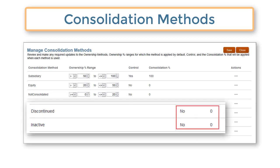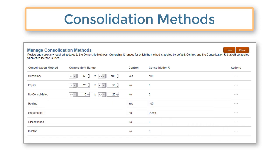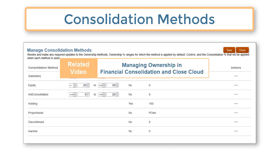The discontinued and inactive methods set control to no and consolidation percentage to zero. These methods are reserved for future releases. You can manually override the consolidation methods assigned by the system. For more information on overriding consolidation methods, see the Managing Ownership video.